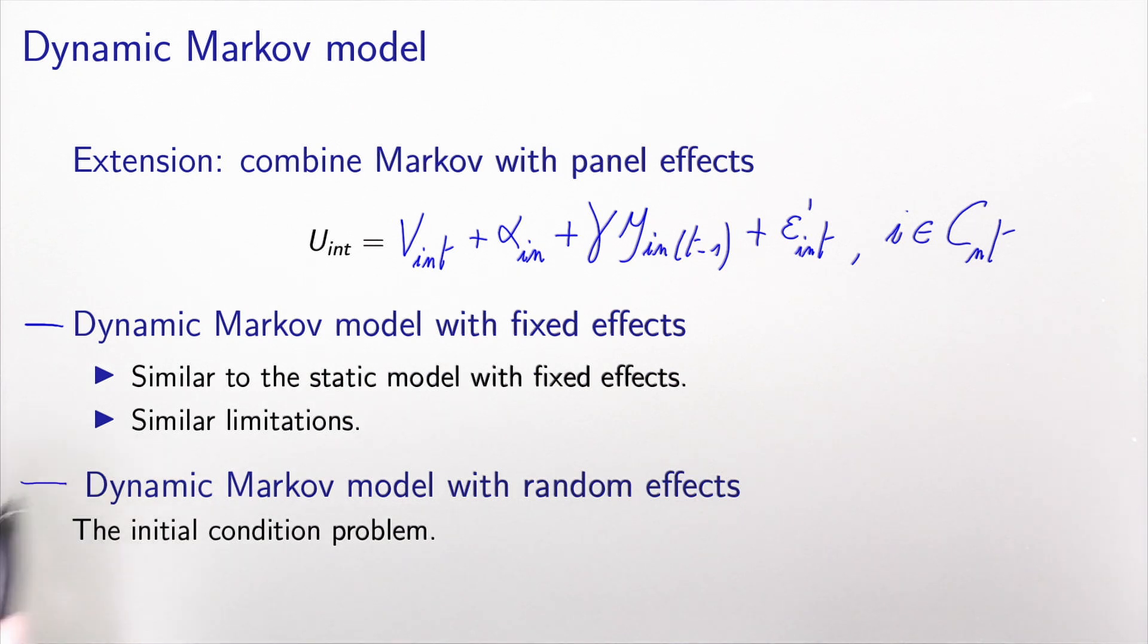The second case is when we have this dynamic Markov model with random effects. And in this case, we have a problem which is usually referred to as the initial condition problem in the literature. And this is the main topic of this video, is to understand the initial condition problem and to see how to deal with it.